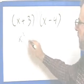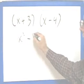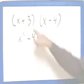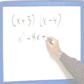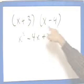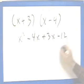x times x, x squared, x times minus 4 is minus 4x. 3 times x is 3x. 3, positive 3 times a negative 4 is a negative 12.